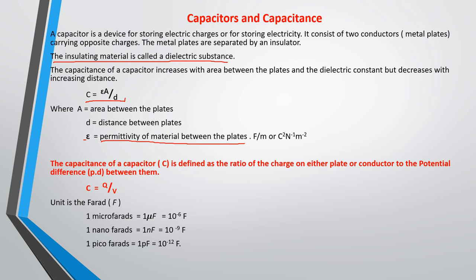The capacitance of a capacitor is defined as the ratio of the charge on either plate to the potential difference between them. So capacitance C equals Q over V, Q equals CV, or V equals Q over C, depending on what you are looking for.